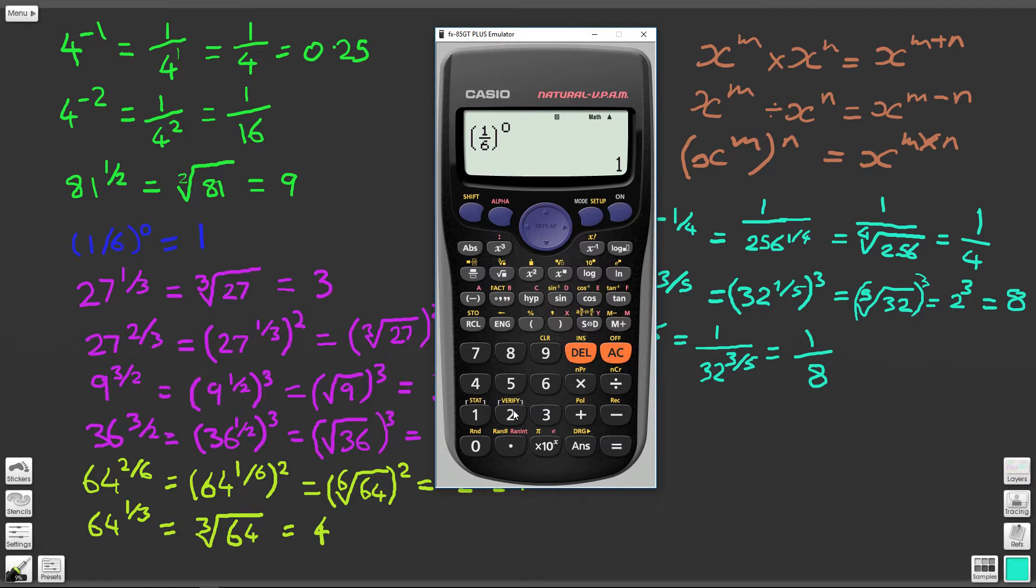Then we've got 27 to the power of 1 third. 27 to the power of 1 divided by 3 gives us 3. 27 to the 3rd is the cube root of 27 which is 3.